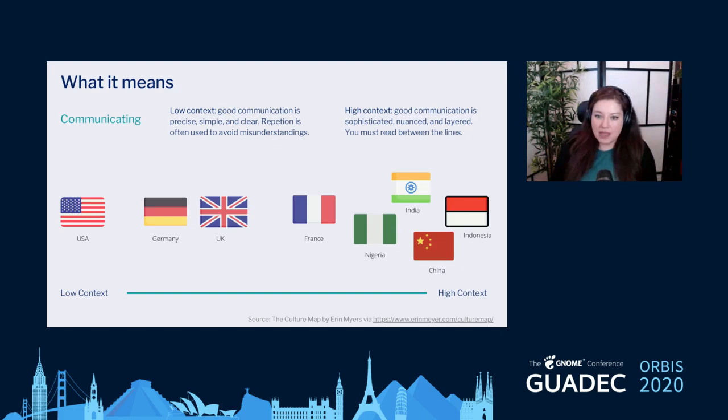An example is communicating. There are cultures that are low context and some that are high context. Low context cultures value communication that is precise, simple, and clear, and oftentimes repetition is used to avoid misunderstandings. High context cultures are ones that value sophisticated, nuanced, and layered language — sometimes you have to read between the lines to fully understand the message.